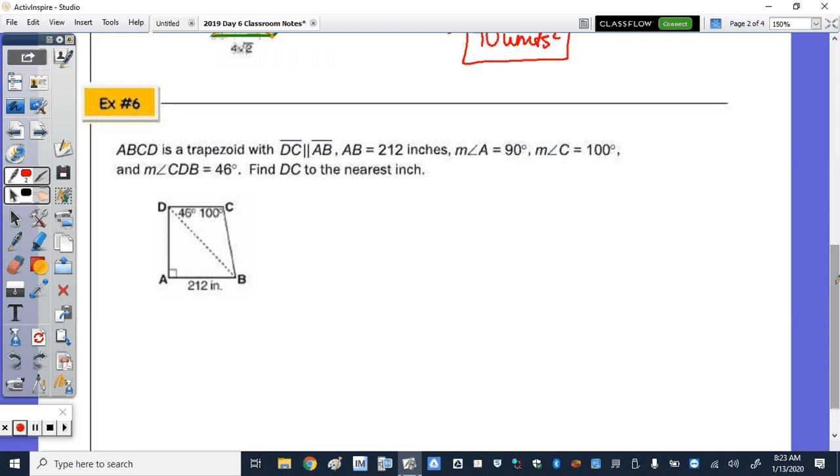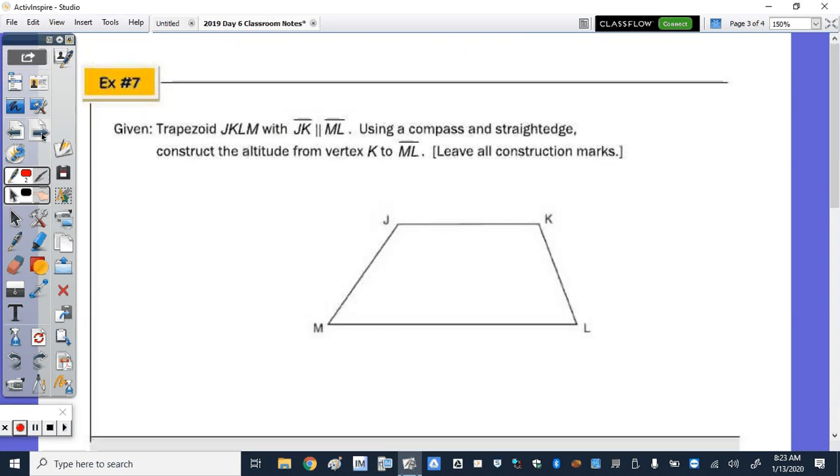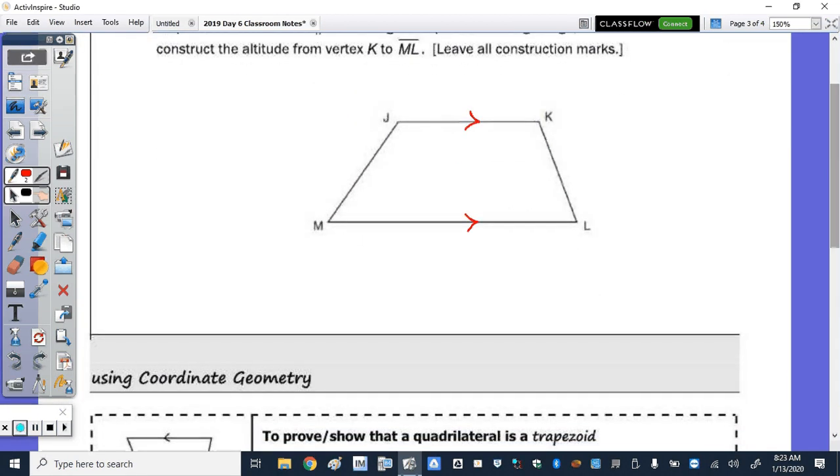So now let's go on to number 7, which is a construction. So given trapezoid JKLM with JK parallel to ML, so therefore these are the bases. Using a compass and straight edge, construct the altitude from vertex K to ML. So again, the altitude, remember, is perpendicular to the side that it's drawn to. So from vertex K, well, the first thing I'm going to do is extend, you use your ruler, just the ruler tool up here at the board. It's not easy to use.